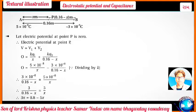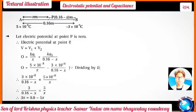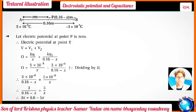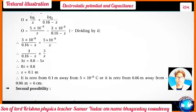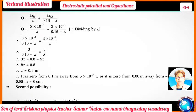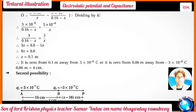Setting up the equation: 0 = 5×10⁻⁸/x + (-3×10⁻⁸)/(0.16 - x). This gives 5/(0.16 - x) = 3/x, solving we get the point is 0.06 meter away from the -3×10⁻⁸ coulomb charge, i.e., 0.1 meter from the 5×10⁻⁸ coulomb charge.